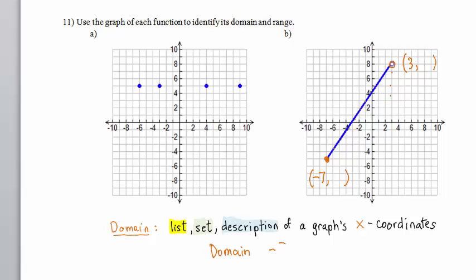So the domain is -7 ≤ x < 3, because this point right here is not included in the graph of this function.